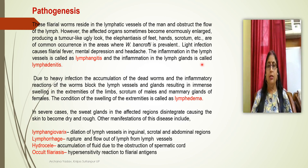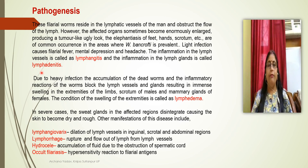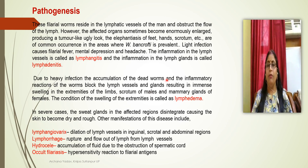Other pathological effects include lymphangitis (inflammation of lymph vessels) and lymphadenitis (inflammation of lymph glands). Due to heavy infection and accumulation of dead worms, they block the lymph vessels or glands, causing swelling in extremities such as the scrotum in males and mammary glands in females. This condition is called lymphedema.